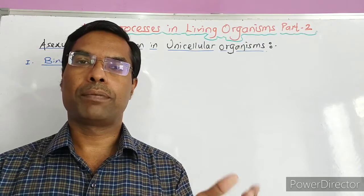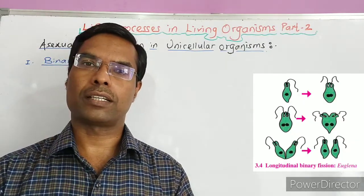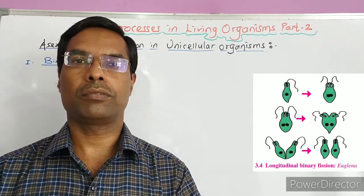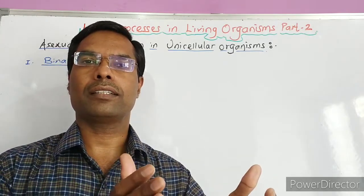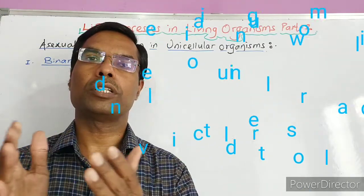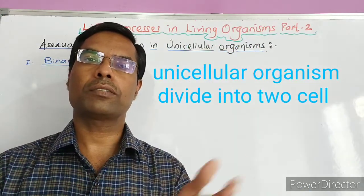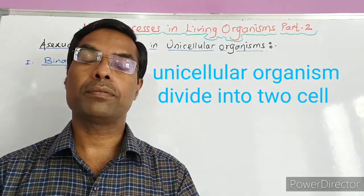In euglena, the plane of fission is vertical and therefore it is called longitudinal binary fission. In this way, a single unicellular organism divides into two organisms, it is called binary fission.